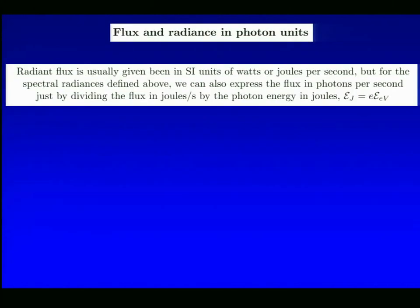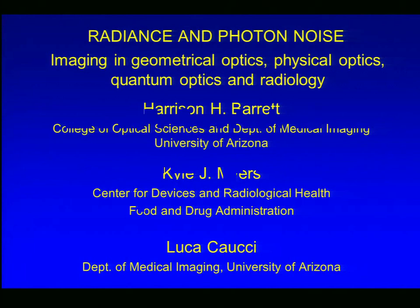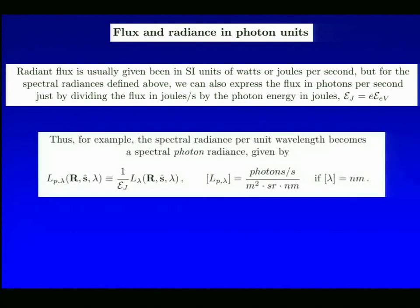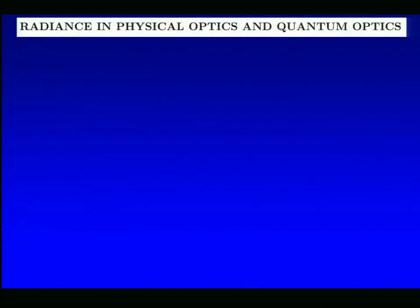Now, another wrinkle in the definition of radiance is that we don't have to express the flux in the traditional units of watts or joules per second. If we're using the spectral radiances, and we are talking about one wavelength or one photon energy at a time, we can easily convert watts to photons per second, leading to the quantity of spectral photon radiance, which is a spectral radiance re-expressed in photons per second rather than in watts or joules per second.